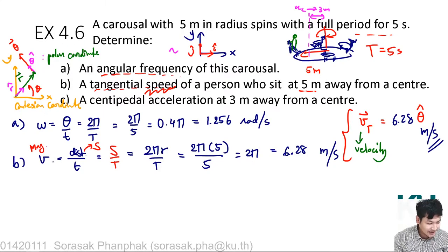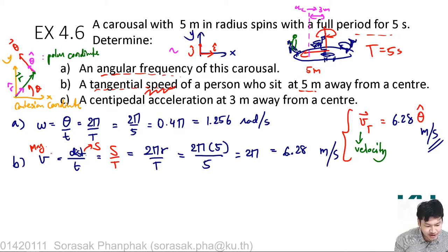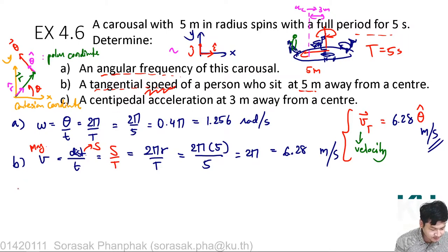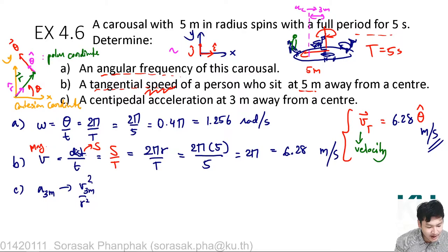For part C, the centripetal acceleration at 3 meters away is also influenced by the tangential velocity at that radius. Since different radial positions have different tangential velocities, to find the acceleration at 3 meters you must first find v at 3 meters, then use v² over r to find the centripetal acceleration.